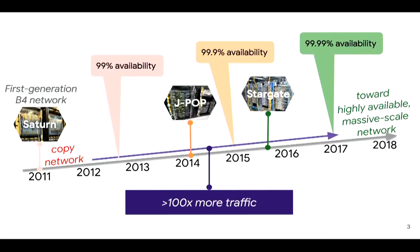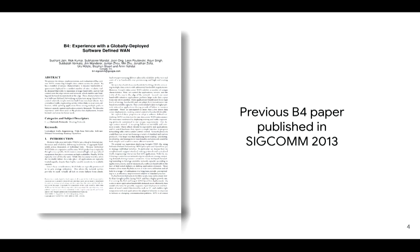In this talk, I'm going to present our five-year experience in evolving B4, Google's globally deployed software-defined WAN, from a content copy network offering 99% availability to a highly available backbone network with four nines of availability, while at the same time supporting 100x more traffic. This is a follow-up to our previous paper published in SIGCOMM 2013.